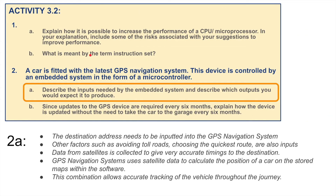Moving to part two: a car is fitted with the latest GPS navigation system. This device is controlled by an embedded system in the form of a microcontroller. We need to describe the inputs needed by the embedded system. The destination address needs to be inputted into the GPS navigation system. Other factors such as avoiding toll roads, choosing the quickest route, adding extra stops such as visiting landmarks or filling up for petrol may also be included. These are all inputs. The data from satellites is collected to give very accurate timings to the destination.